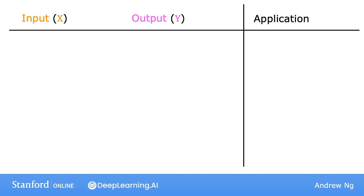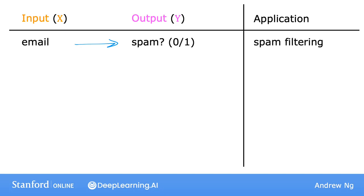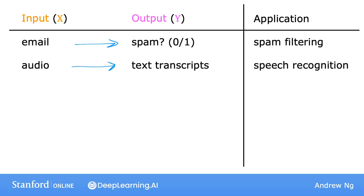Let's look at some examples. If the input x is an email and the output y is whether this email is spam or not spam, this gives you your spam filter. Or if the input is an audio clip and the algorithm's job is to output the text transcript, then this is speech recognition.